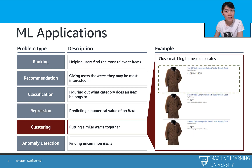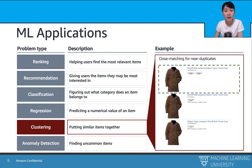A classification problem knows the categories at the time when we are formulating the ML problem. What if we don't know the exact categories and we want the model to figure it out itself? For example, at Amazon.com we may have millions of SKUs and lots of them are duplicated from different sellers. This kind of problem can be viewed as clustering, which categorizes similar items together.